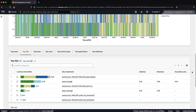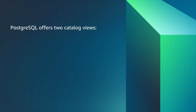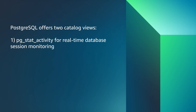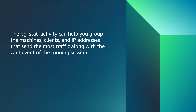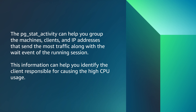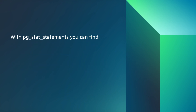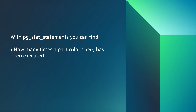Now let's see how we can identify the issue from the database engine. PostgreSQL offers two catalog views: pg_stat_activity for real-time database session monitoring, and pg_stat_statements — created by the pg_stat_statements extension — for tracking planning and execution statistics of all SQL statements performed by the PostgreSQL engine. The pg_stat_activity view can help you group the machines, clients, and IP addresses that send the most traffic, along with the wait event of the running session. This information can help you identify the client responsible for causing high CPU usage. With pg_stat_statements, you can find how many times a particular query has been executed, the time it took per execution, total time, and I/O cost by the query.